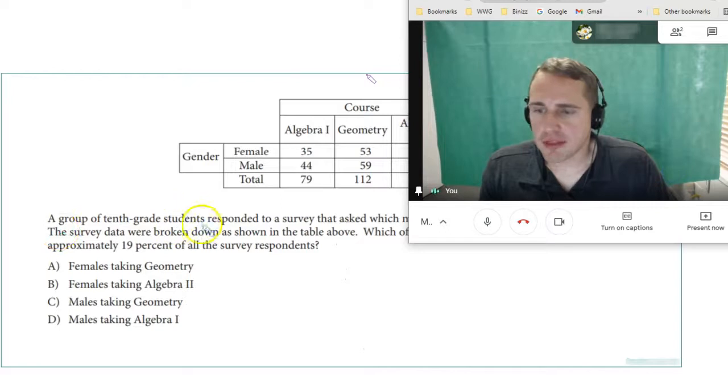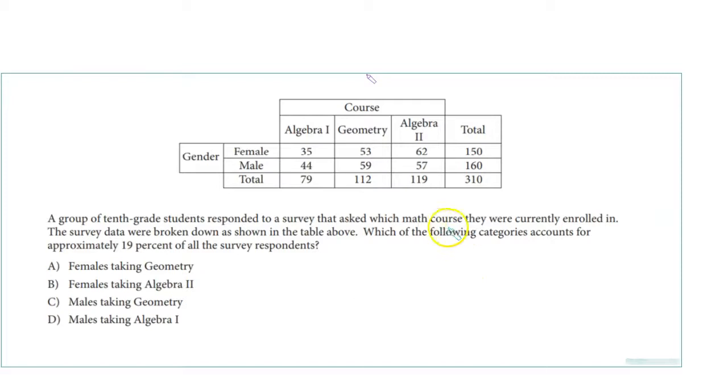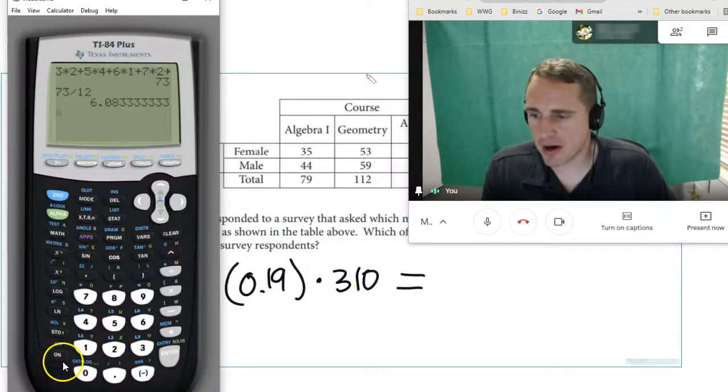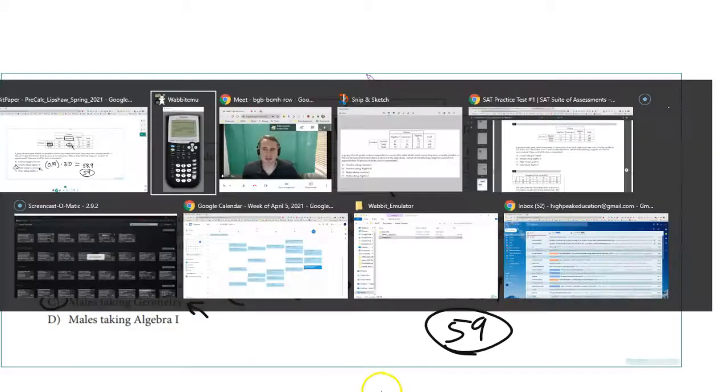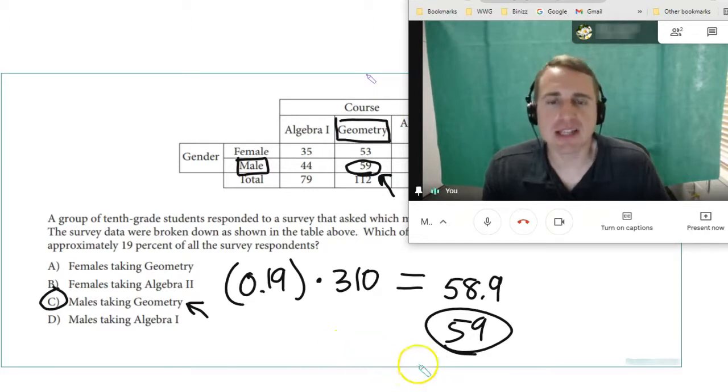Number 30: A group of 10th grade students responded to a survey that asked which math course they were currently enrolled in. Which of the following categories accounts for approximately 19% of all the survey respondents? So 19%. Let's do 0.19, which is 19%, times 310. That's 58.9, so that's about 59. So we're looking for 59, which is there. That should be geometry males, so that's males taking geometry. We used percentages and we located the place on the table.